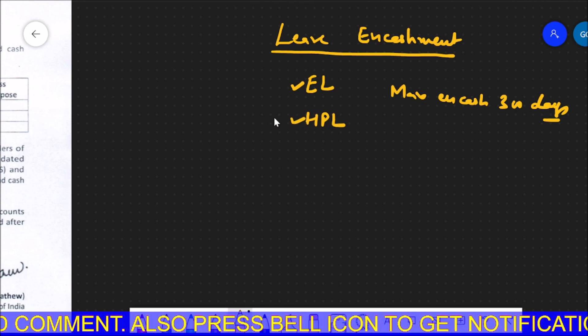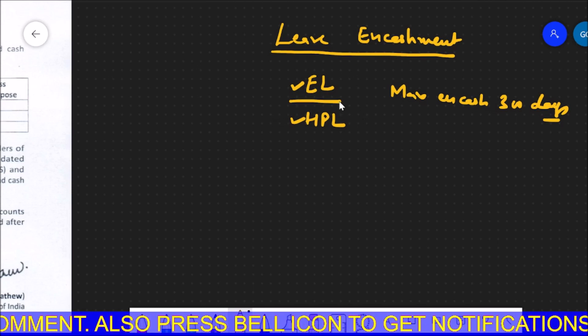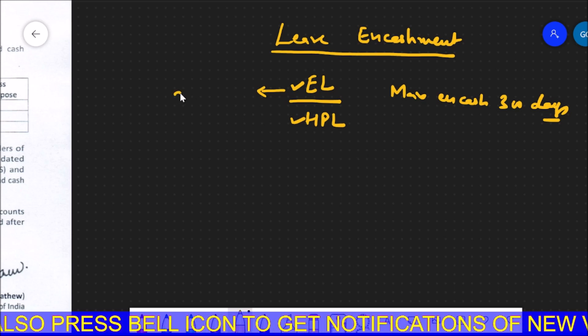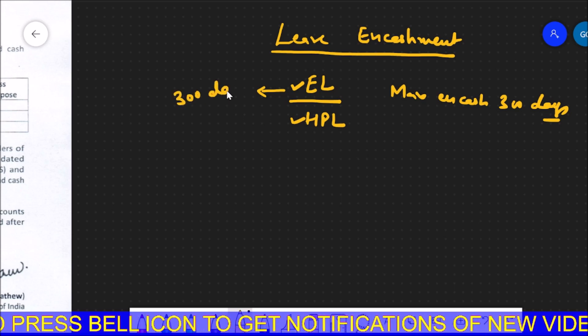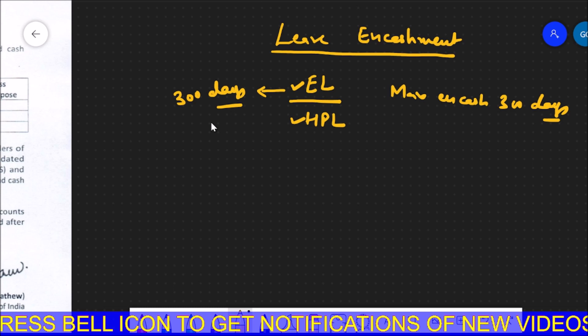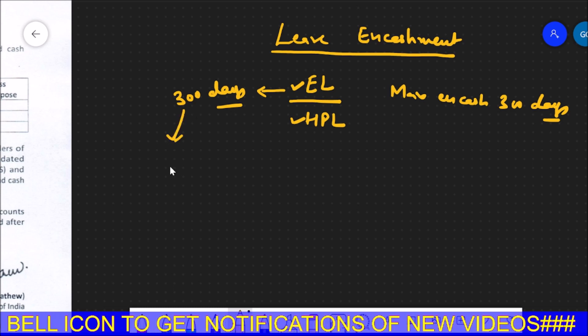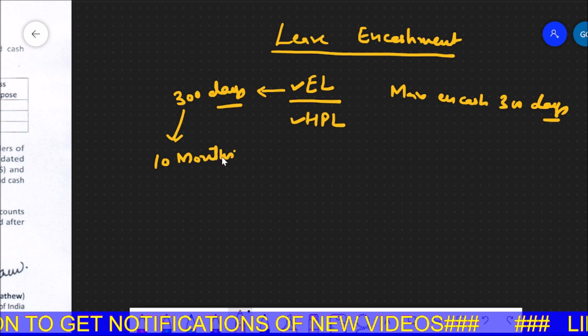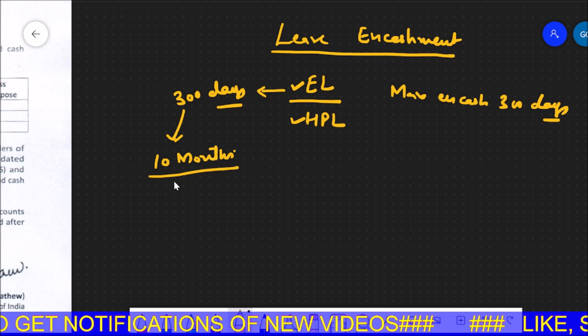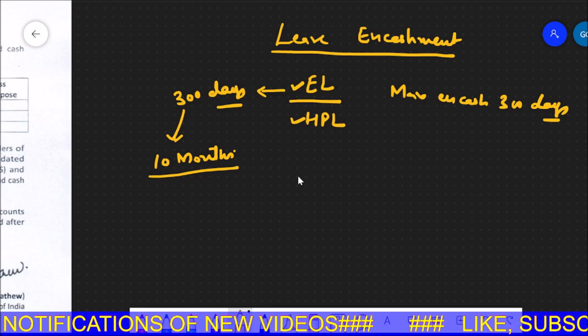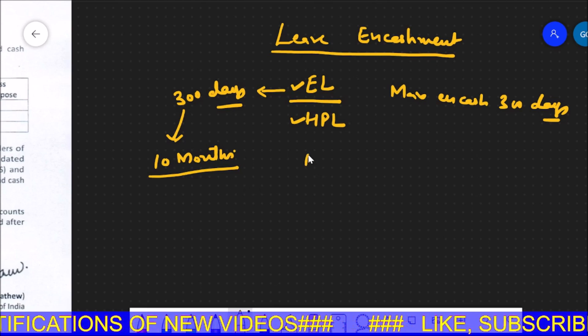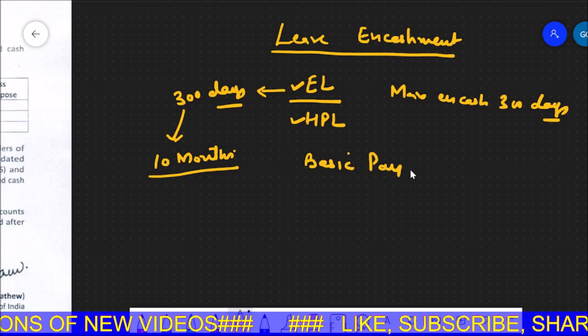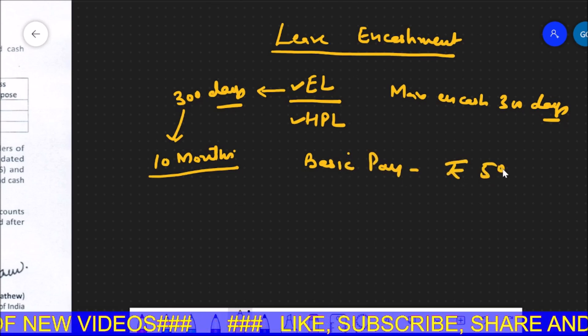So I just presume that in the account 300 days are available. If you roughly calculate, then it becomes 10 months. So how is the calculation? Let's discuss one example. Let's say someone's basic pay, meaning pay in the pay level, is Rs. 50,000 when they retire.